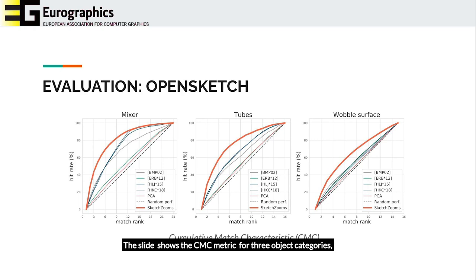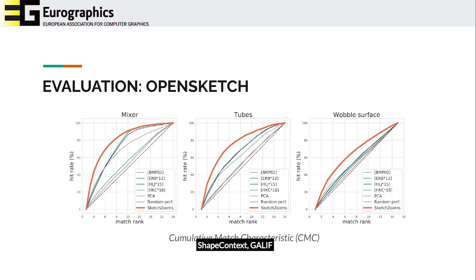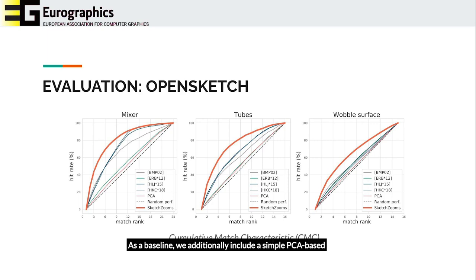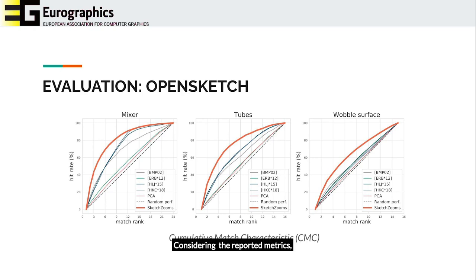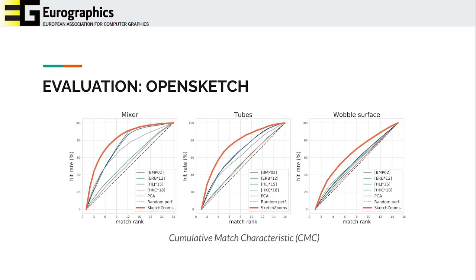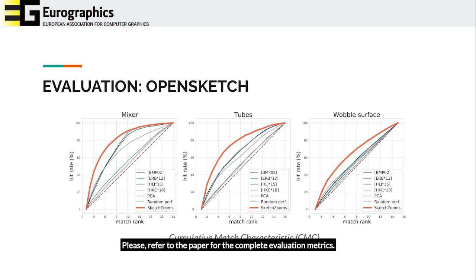The slide shows the CMC metric for three object categories. The curves correspond to each competing feature: shape context, GALIF, MatchNet, and the descriptors proposed in the work of Huang 2018. As a baseline, we additionally included a sample PCA-based descriptor. Considering the reported metrics, we observed that our descriptors outperformed the rest even for none of the categories that were in our dataset. Please refer to the paper for the complete evaluation metrics.